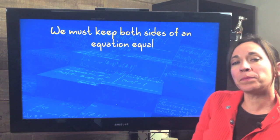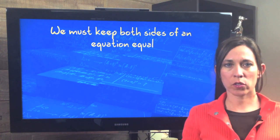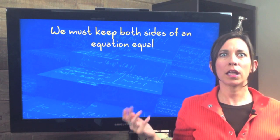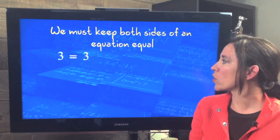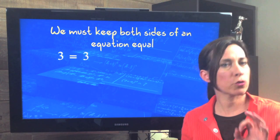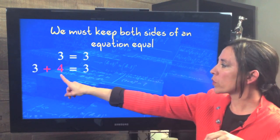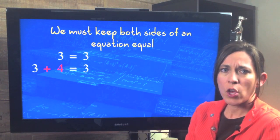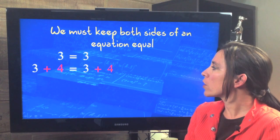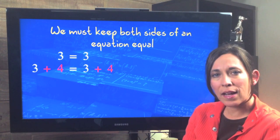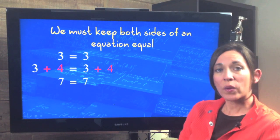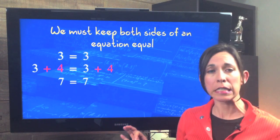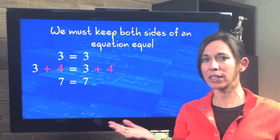So one of the concepts that we have to focus on when solving any type of equation is we have to keep both sides of that equal sign equal. So let's suppose we start with 3 equals 3. It's a true statement, but if we add 4 to only one side of the equal sign, it's no longer equal. We have 7 equals 3. So in order to keep it equal, we also have to add 4 to the right side. Then we get 7 equals 7. So even though we've changed the value on both sides, we've still maintained the integrity of the equal sign. So it's still equal, still balanced.